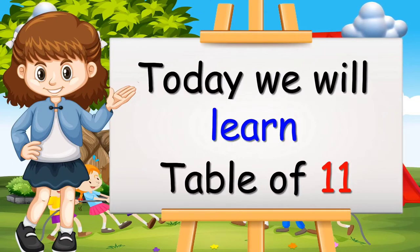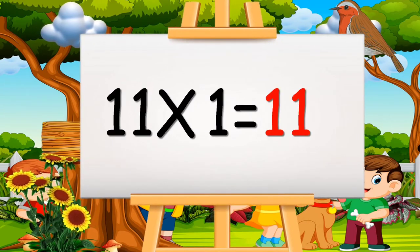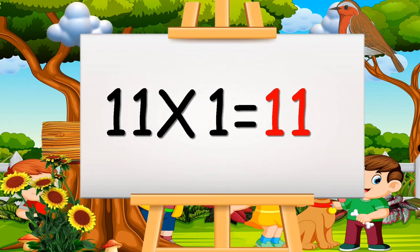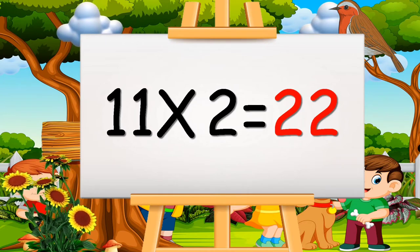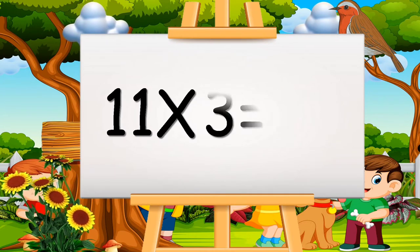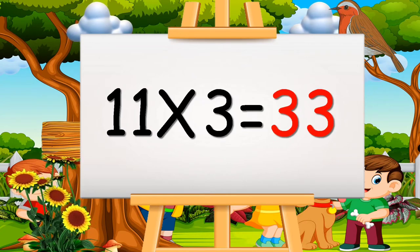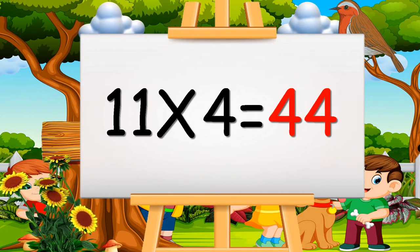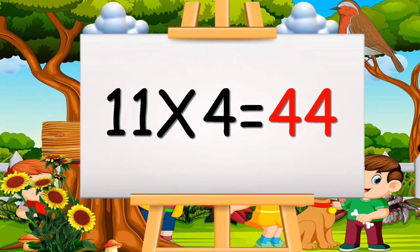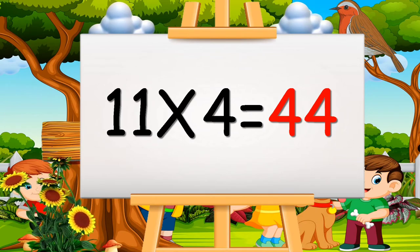Today we will learn the table of eleven. Eleven ones are eleven. Eleven twos are twenty-two. Eleven threes are thirty-three. Eleven fours are forty-four.